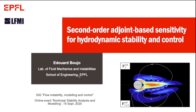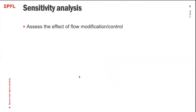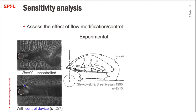I would like to talk about second-order sensitivity. The general idea of sensitivity is to evaluate the effect of a flow modification or control on some property of the flow. A famous example is the experimental study by Strikowski and Sunivazan, where they moved a control device in the wake of a cylinder and obtained maps showing, for different Reynolds numbers, where the vortex shedding is fully suppressed.